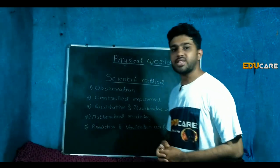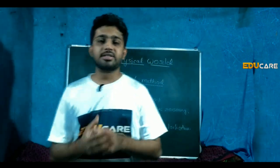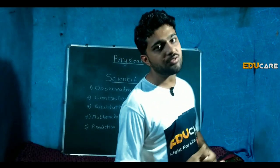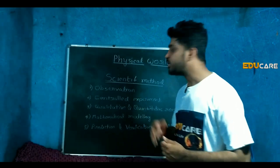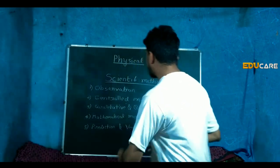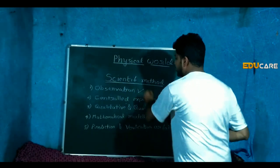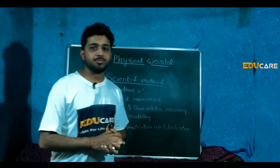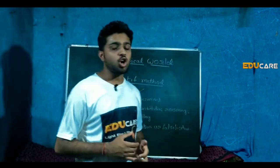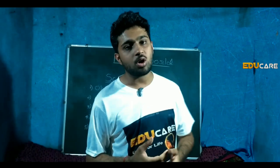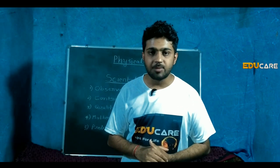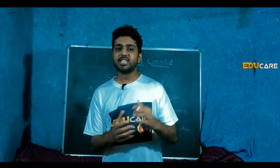To understand the scientific method properly, let us take the example of Newton's law of gravitation, also called the universal law of gravitation. The first step is observation. In this step we observe natural phenomena. For example, Newton observed the falling of an apple from a tree.